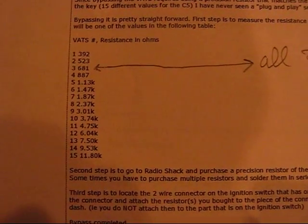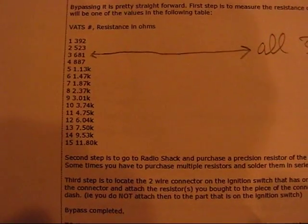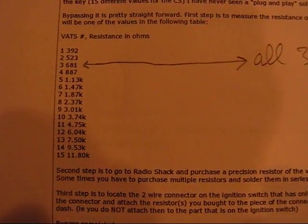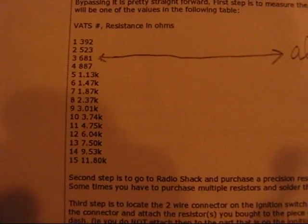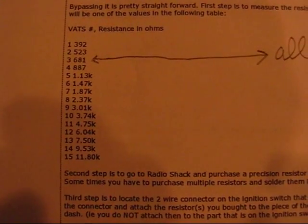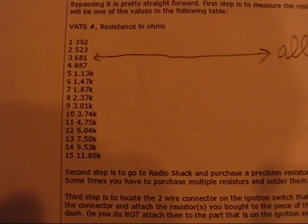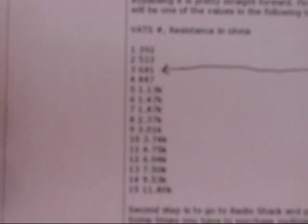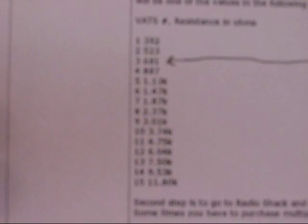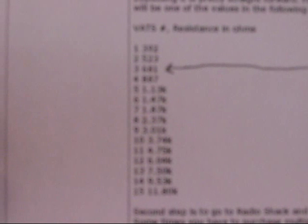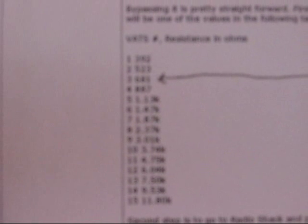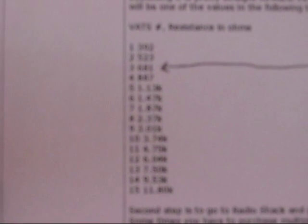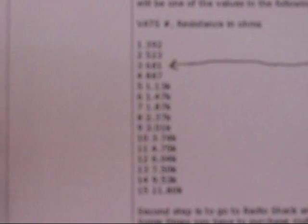Here's a better shot, I hope, of those resistance values. The first one I shot didn't come out very well. Okay, I hope this focuses. That's the different VATs. It's called VATs, that's the security system. And the resistance is in ohms, and there are 15 of them.